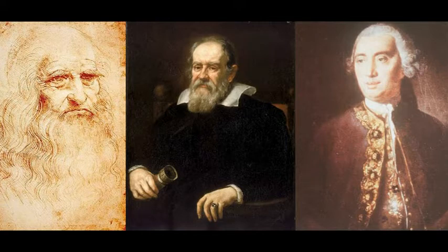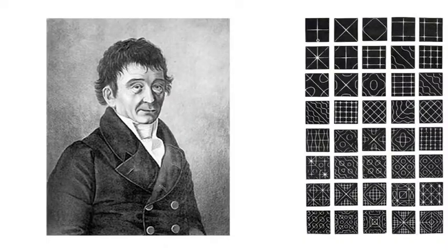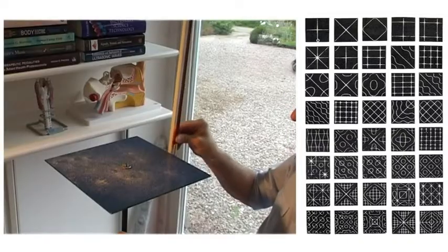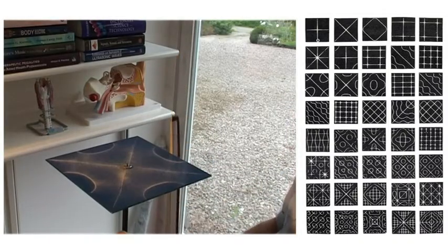If we have a quick look at the history of cymatics, beginning with the observations of resonance by da Vinci, Galileo, the English scientist Robert Hooke, and then Ernest Chladni. He created an experiment using a metal plate, covering it with sand, and then bowing it to create the Chladni patterns that you see here on the right.